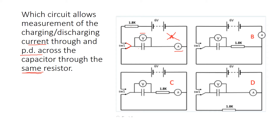Looking at circuit C: when we are discharging, we are discharging through this resistor — we have an ammeter and a voltmeter. When we are charging, we are also charging through this same resistor. That would suggest C is the correct answer. Let's double-check: discharging goes through this resistor with an ammeter and voltmeter. For the top charging circuit, when there is no longer a connection at that point, we are not going through the resistor — so that confirms the answer is C.